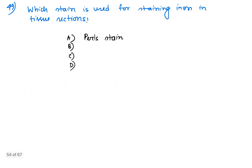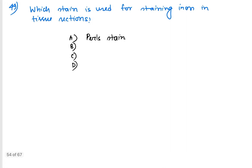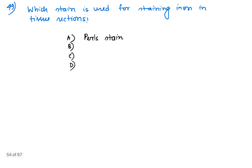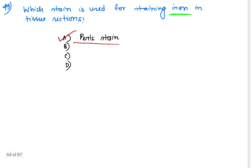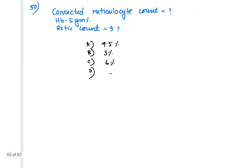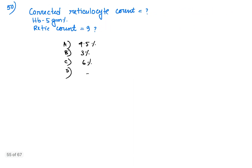Question number 49: which stain is used for staining iron in tissue sections? The answer is Prussian blue stain, also called Pearl stain — used for iron staining in tissue.